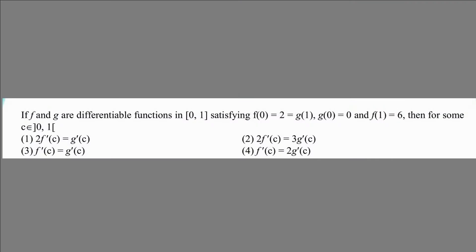So, now you see from the calculus, a problem on Rolle's theorem. Here we have f and g are differentiable functions in closed interval [0, 1] satisfying the conditions: f(0) = 2 = g(1), g(0) = 0, and f(1) = 6. Then for c belonging to open interval (0, 1), we have options: 2f'(c) = g'(c), 2f'(c) = 3g'(c), f'(c) = g'(c), or f'(c) = 2g'(c).